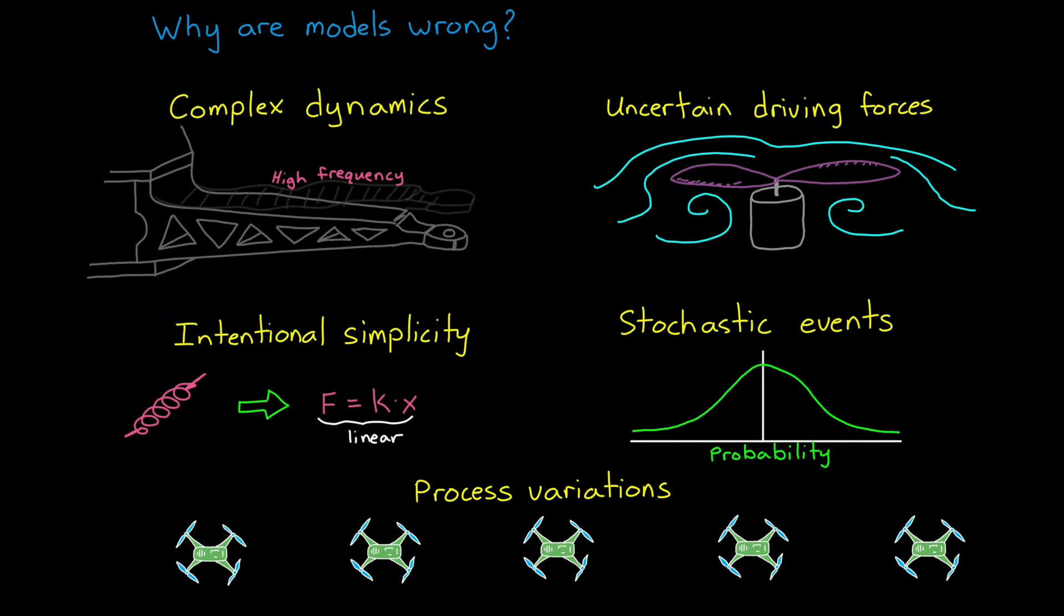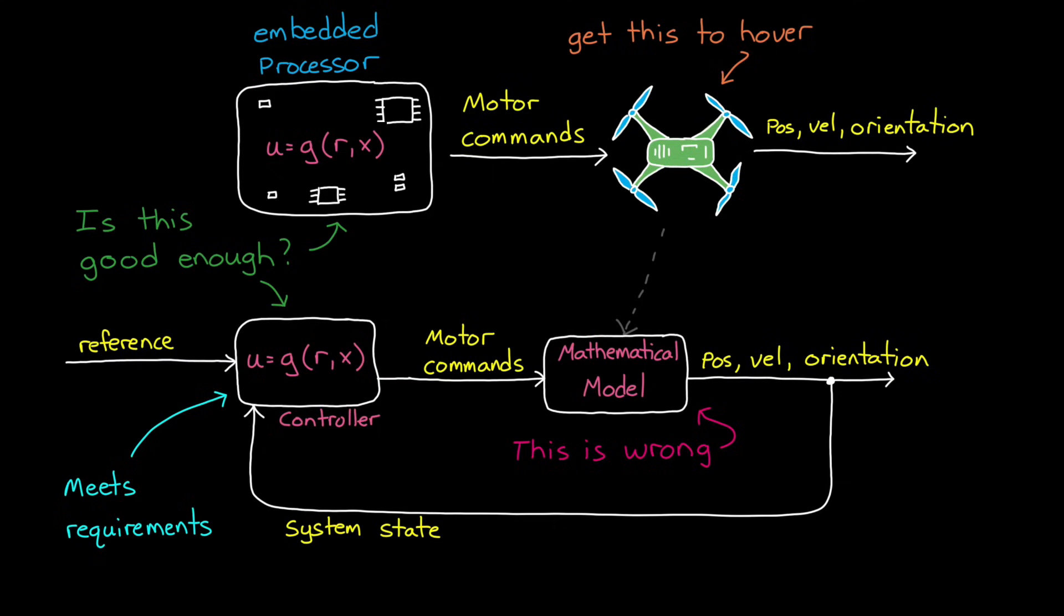All of these things make models imperfect representations of real life. They're just approximations, but they're extremely helpful to solve many problems, so we're willing to put up with the fact that they aren't perfect.